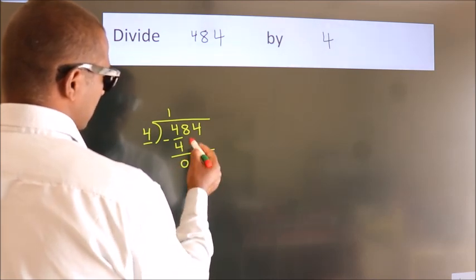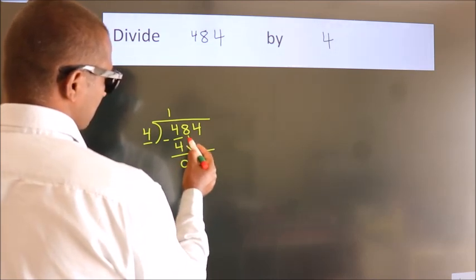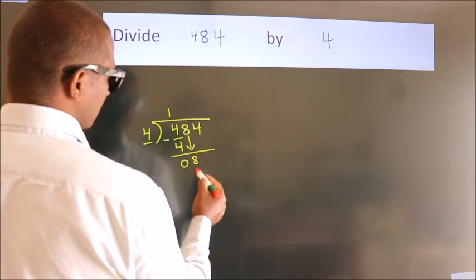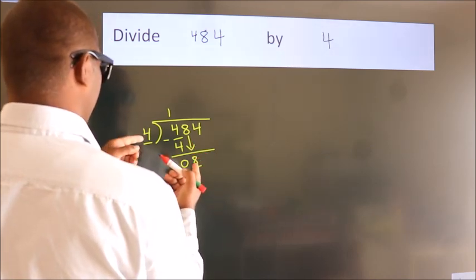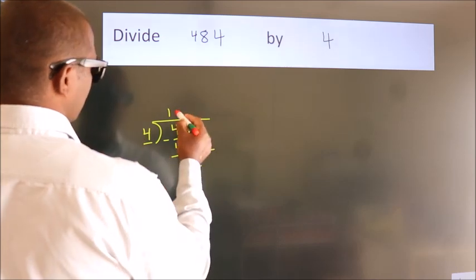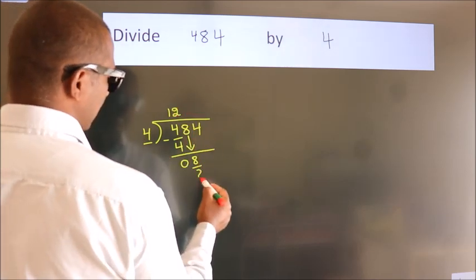After this, bring down the beside number. So, 8 down. When do we get 8? In 4 table. 4 twos, 8.